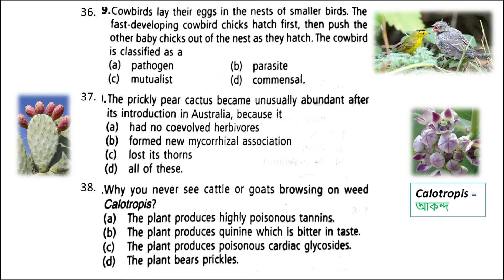Next: why do you never see cattle or goats browsing on Calotropis? The answer is option C: the plant produces poisonous cardiac glycosides. Prey species have evolved various defenses to lessen the impact of predation. For plants, herbivores are the predators. Plants have evolved morphological and chemical defenses against herbivores. Calotropis produces highly poisonous cardiac glycosides. A wide variety of chemical substances extracted from plants on a commercial scale — like nicotine, caffeine, quinine, strychnine, opium, etc. — are actually produced as defenses against grazers and browsers.